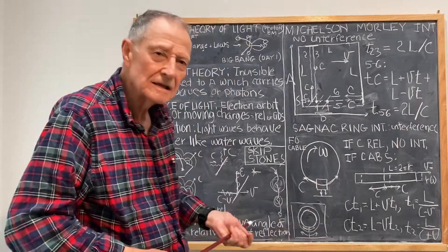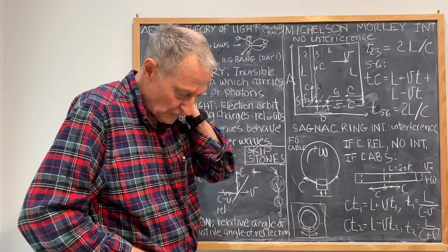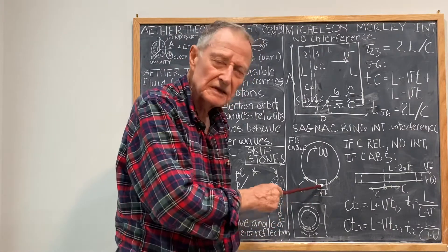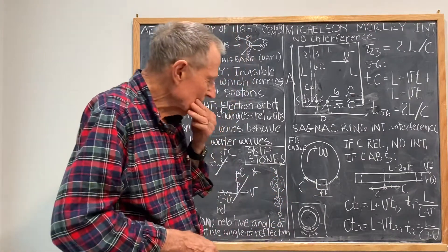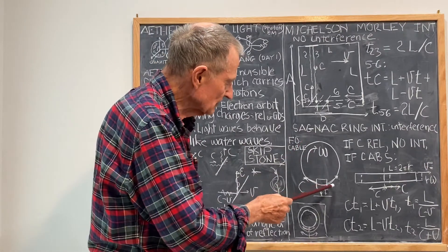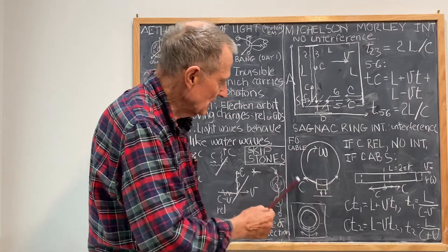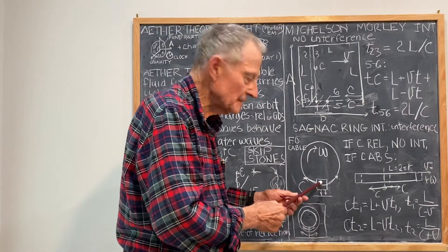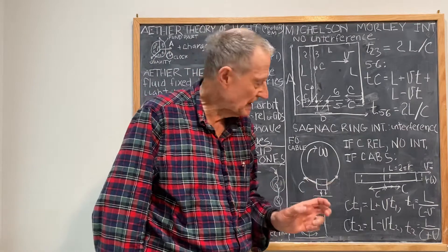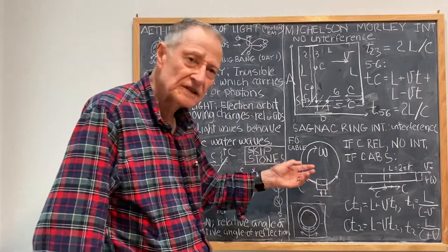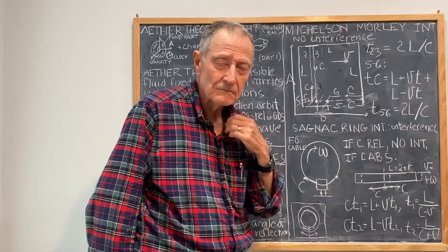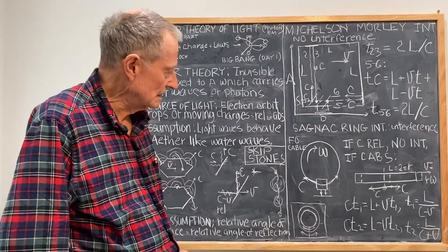By the relative theory of light, which says that the speed of light is constant relative to its source, you would have that this photon relative to the beginning travels that distance, and this photon relative travels at a speed C in that distance. And so, they both come together at the same time, and you would see no interference pattern. However, it turns out you do see an interference pattern, so the relative speed theory of light doesn't apply here.